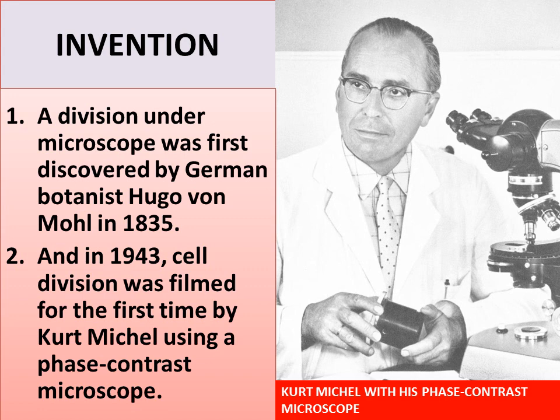Invention number one: cell division under a microscope was first discovered by German botanist Hugo von Mohl in 1835. Number two: in 1943, cell division was first filmed by Kurt Michel using a phase contrast microscope. Here is the picture of Kurt Michel with his phase contrast microscope while filming cell division in 1943.